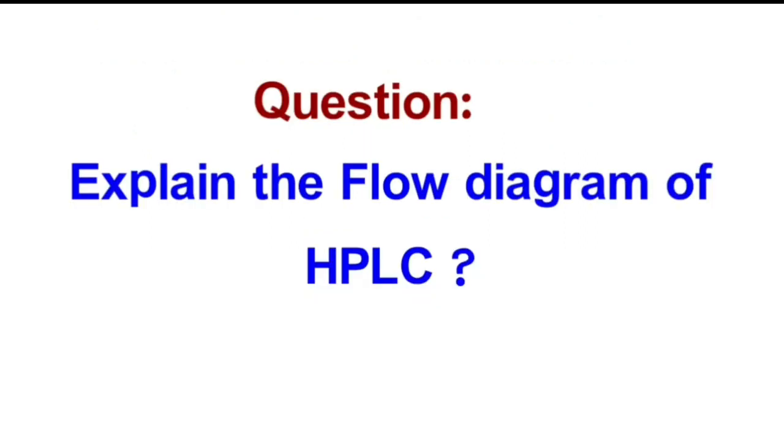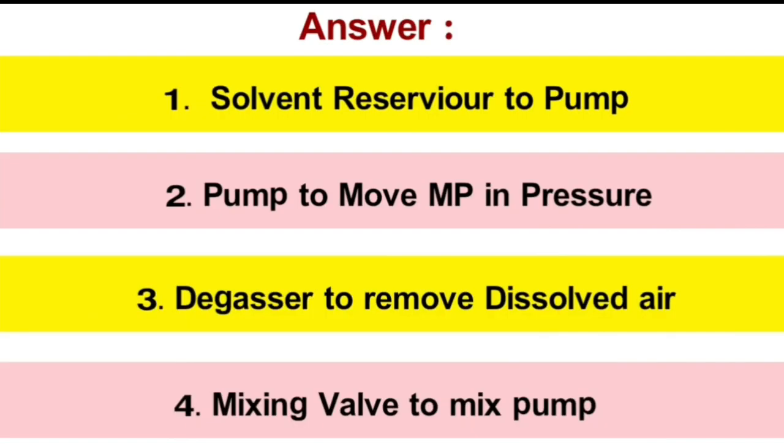Question: Explain the flow diagram of HPLC. Answer: The flow diagram of HPLC: Solvent reservoir to pump. Pump to move mobile phase in pressure. Degasser to remove dissolved air. Mixing valve to mix pump.